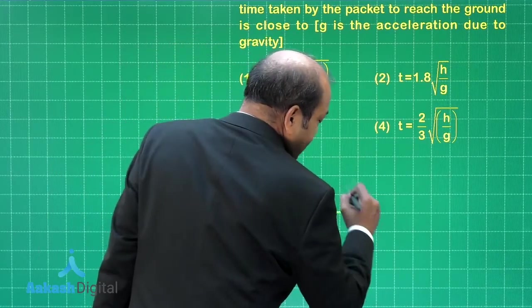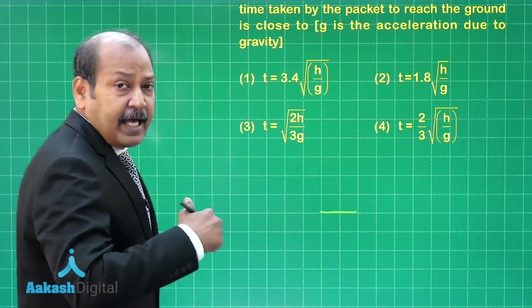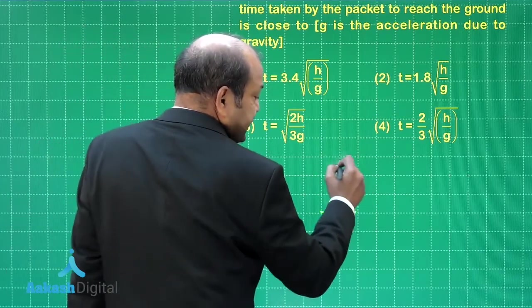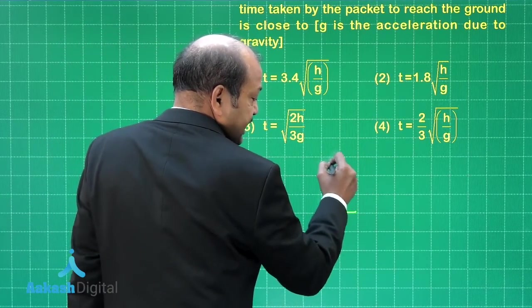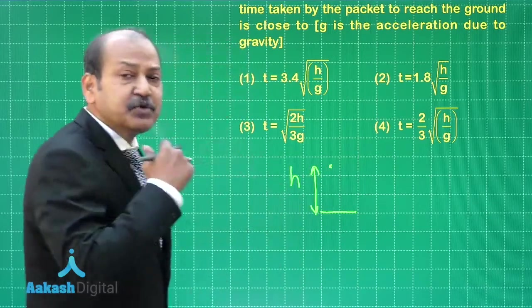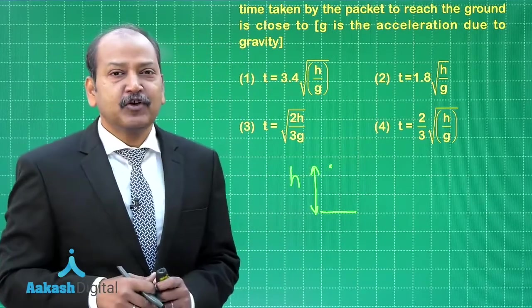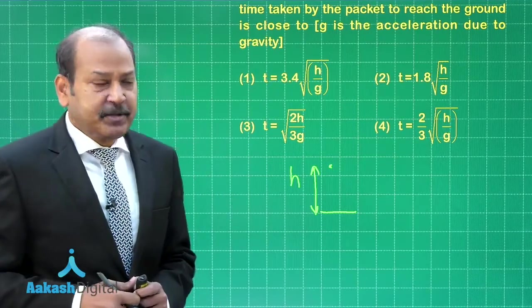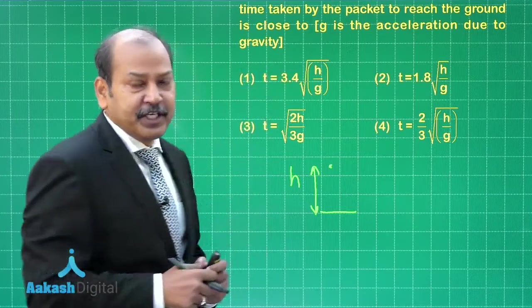If it has started from ground and has gone to height h, the helicopter has gone to height h. Let us say it has come up to this height. This is h, and at this moment the velocity of the helicopter would be root 2gh in the upward direction because the acceleration is in the upward direction.